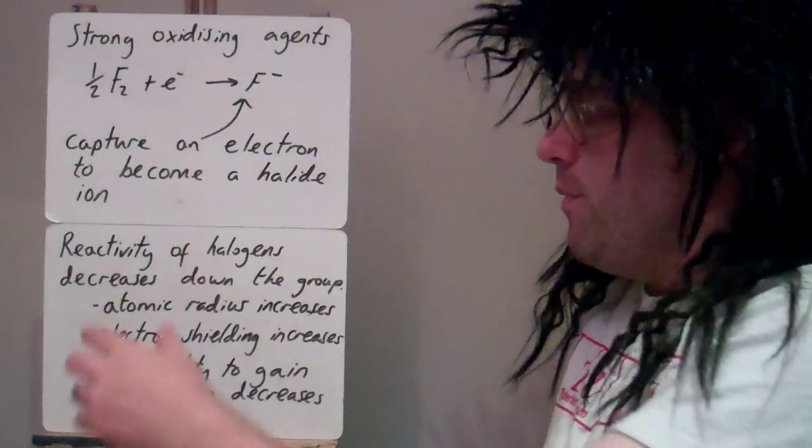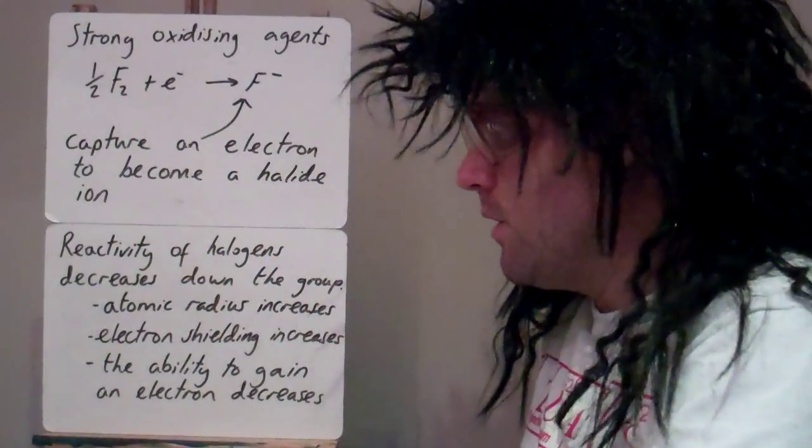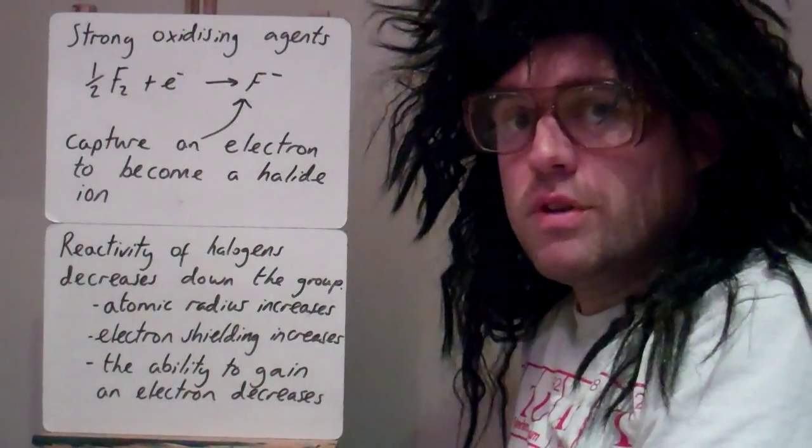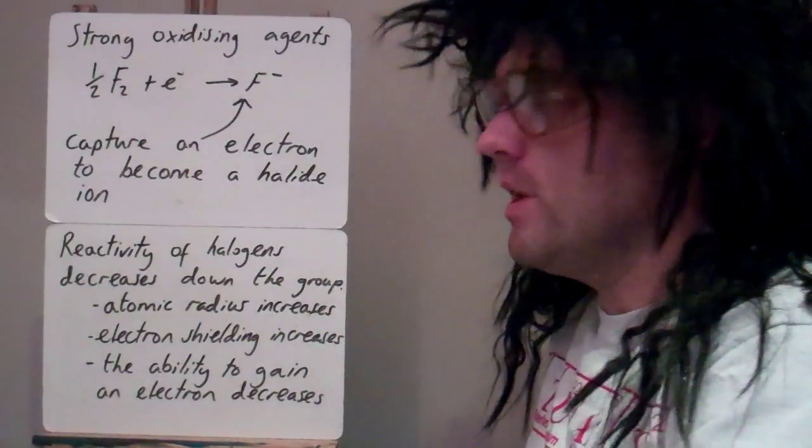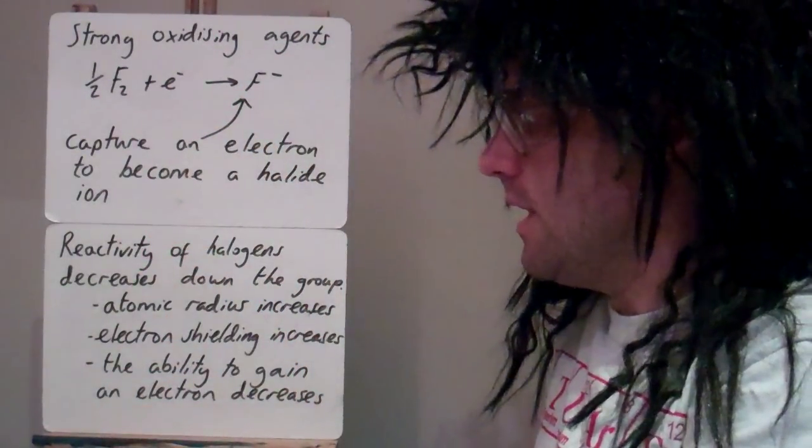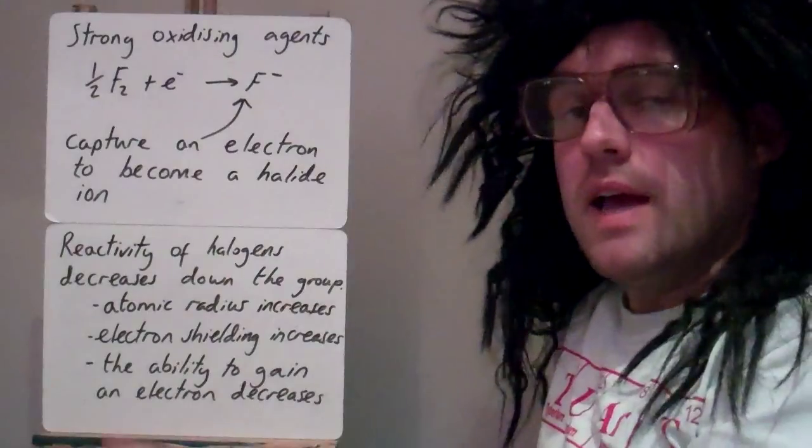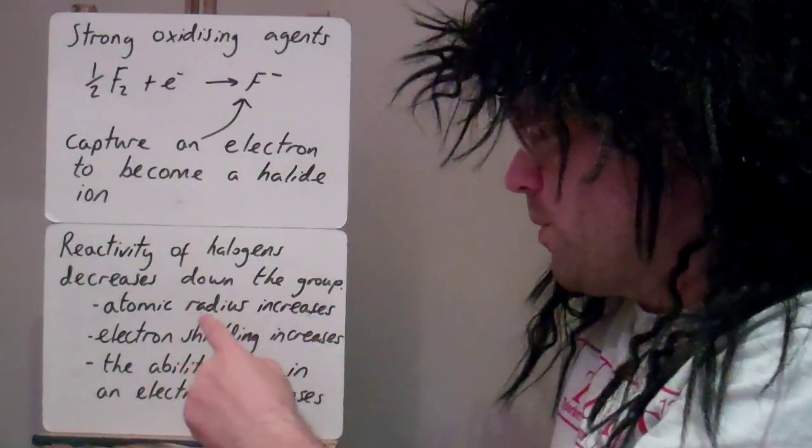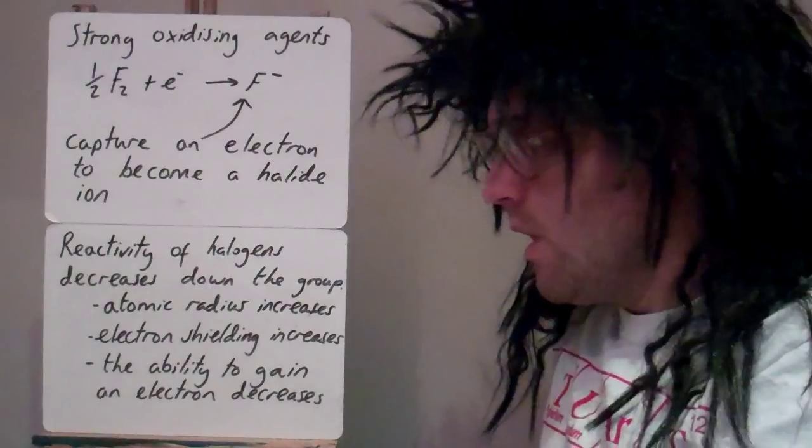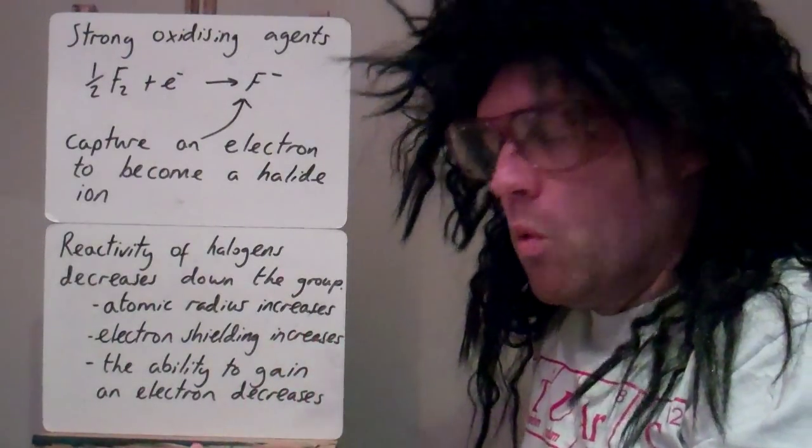So if we look at the reactivity of the halogens, as we go down the group, the reactivity decreases. So the most reactive is fluorine, and the reactivity decreases as we go down. And the reason for this is that as you go down the group, as with all groups, the atomic radius is increasing, basically because we've got more shells.